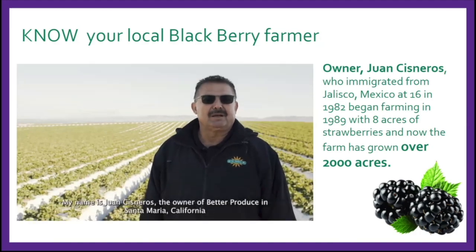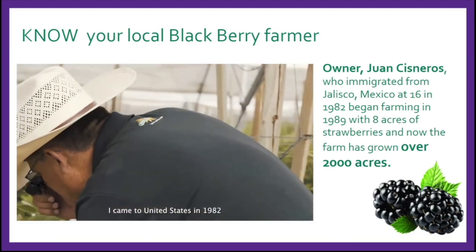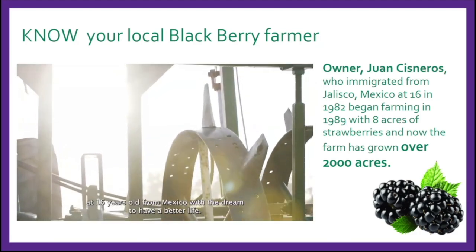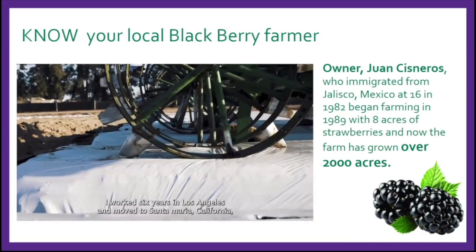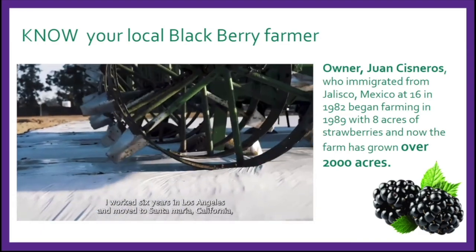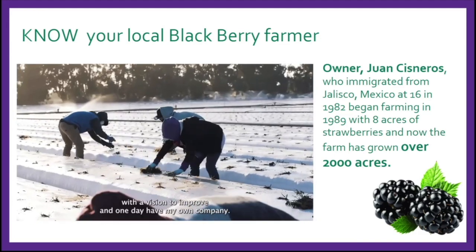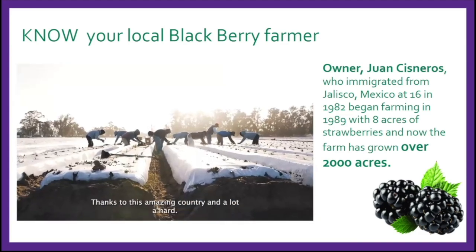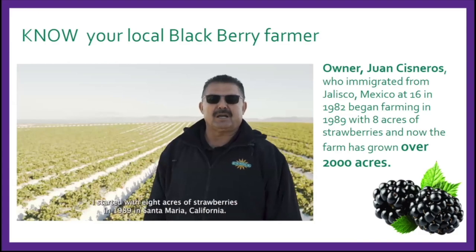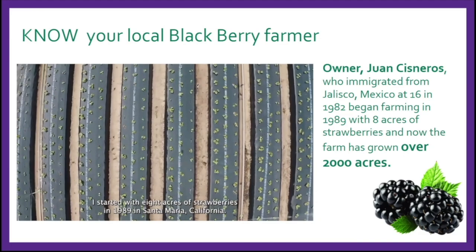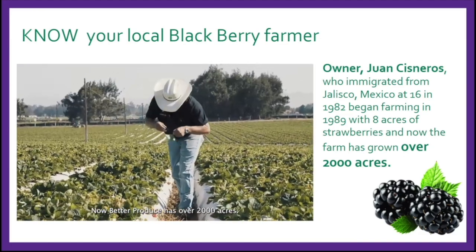My name is Juan Cisneros, owner of Berre Produce in Santa Maria, California. Berre Produce is a family operation. I came to the United States in 1982 at 16 years old from Mexico with a dream for a better life. I worked six years in Los Angeles, then moved to Santa Maria in 1988 where I picked strawberries with a vision to one day have my own company. Thanks to this amazing country and a lot of hard work, my dream came through — I started with eight acres of strawberries in 1989.